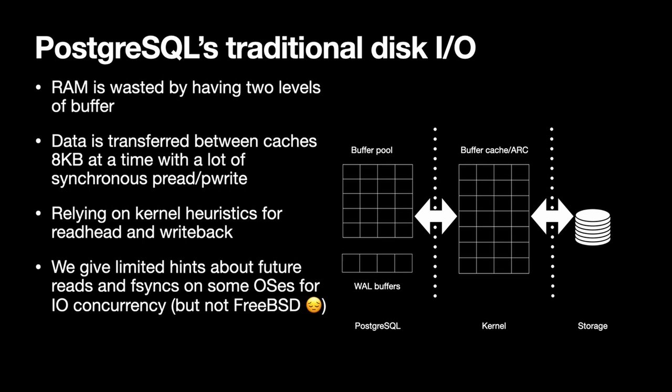Postgres is relying on kernel heuristics for read-ahead and write-back, and IO scheduling generally. We do have limited kinds of hints about future reads and fsyncs, implemented using POSIX fadvise and sync_file_data, but those things pretty much only work on Linux — maybe also NetBSD — and they certainly don't work on FreeBSD. I've actually tried to fix that but haven't managed to land any patches in that area.